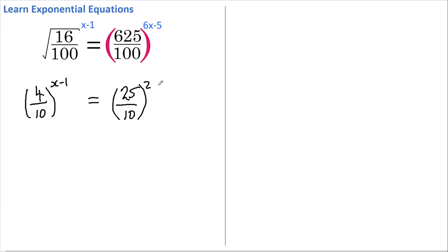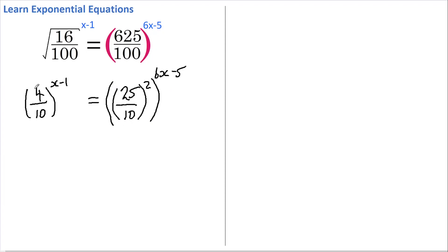That 25 over 10 squared is all to the power of 6x minus 5, and for clarity I'll put another set of brackets around it.